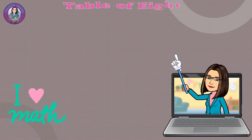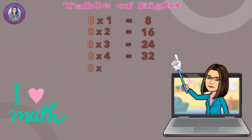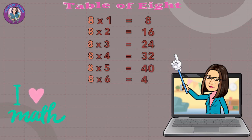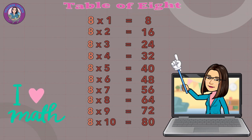Table of 8. 8 x 1 equals 8. 8 x 2 equals 16. 8 x 3 equals 24. 8 x 4 equals 32. 8 x 5 equals 40. 8 x 6 equals 48. 8 x 7 equals 56. 8 x 8 equals 64. 8 x 9 equals 72. 8 x 10 equals 80.